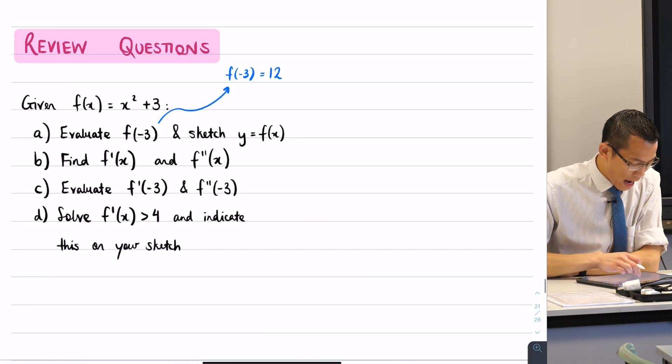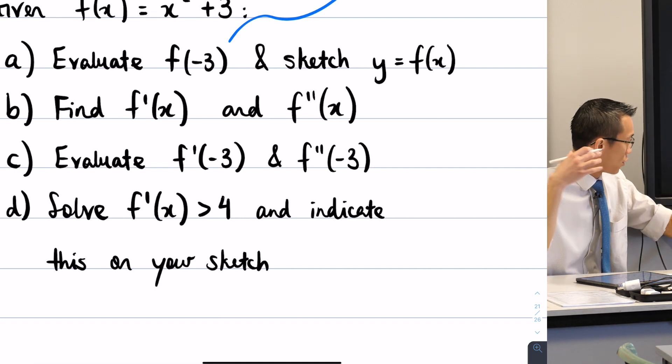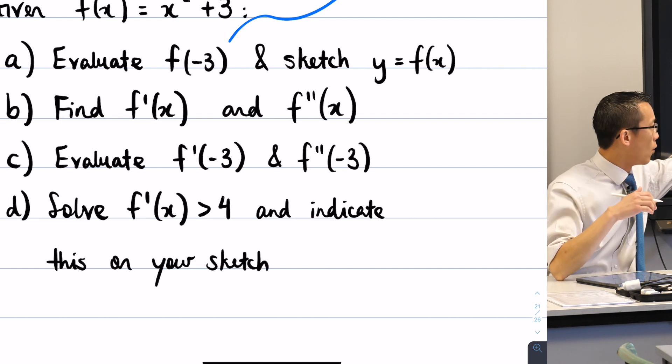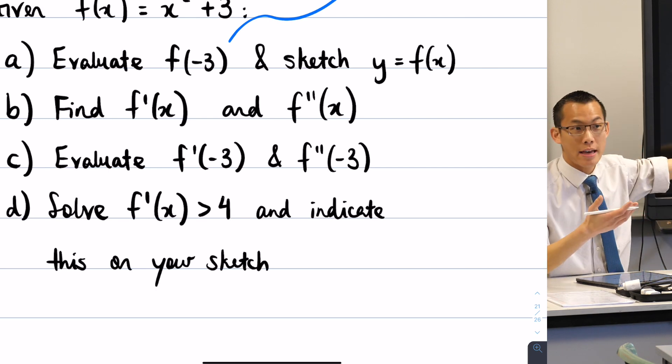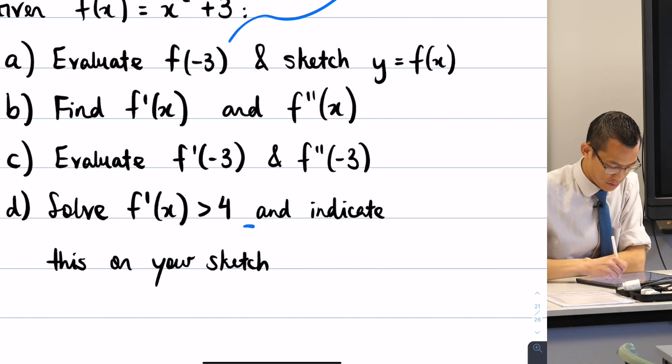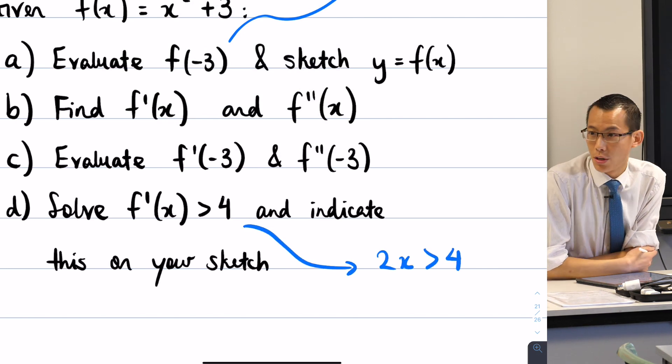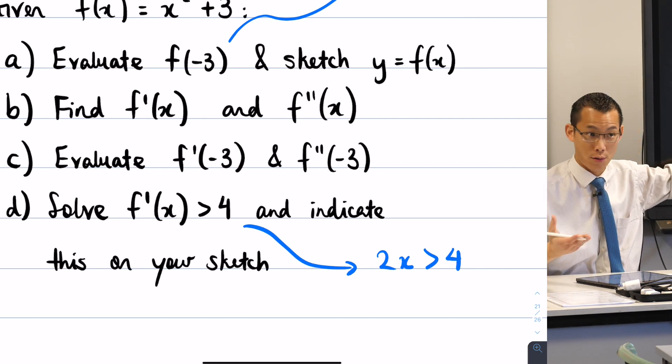All right, so now we've done a, we've done b, we've done c. The last thing, which was just to see if you could bring all the language together from graphing last topic, I said solve when the derivative is greater than 4. And then show me where that is on your sketch. So let's just quickly do it here, I've got some space. Our derivative, as you worked out earlier, was 2x. So to solve when the derivative is greater than 4, I'm going to solve when that's greater than 4.